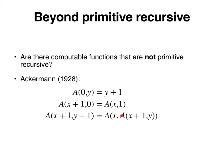And now here we have a double recursion. So A(x + 1, y + 1) = A(x, A(x + 1, y)).